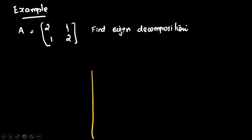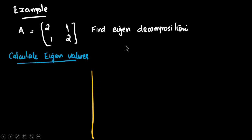Let us see an example of eigen decomposition. We have taken a 2×2 matrix: A equals [2, 1; 1, 2]. First, we need to calculate the eigenvalues. For that we use the eigen equation.